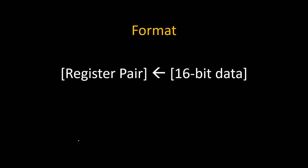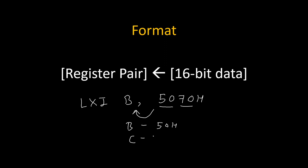Whenever we execute the LXI instruction, a 16-bit data given in the instruction gets loaded inside the register pair. Suppose the instruction is LXI B, 5070H. Because of this, the 16-bit data will get copied inside the BC pair: B will get 50H and C register will get 70H, so the BC register pair will hold 5070H.